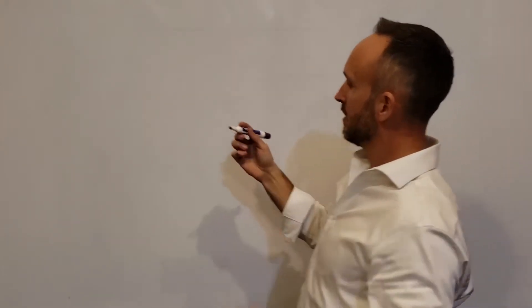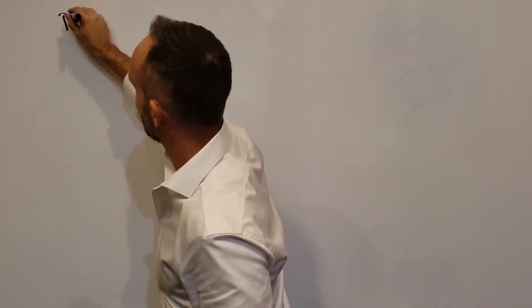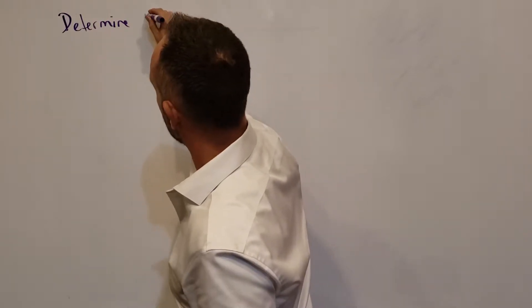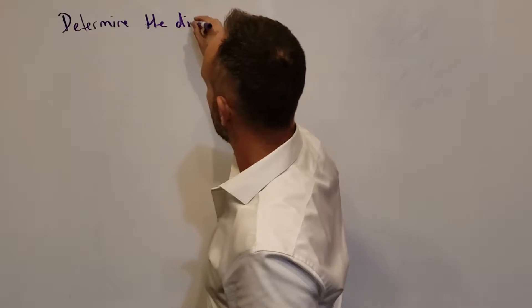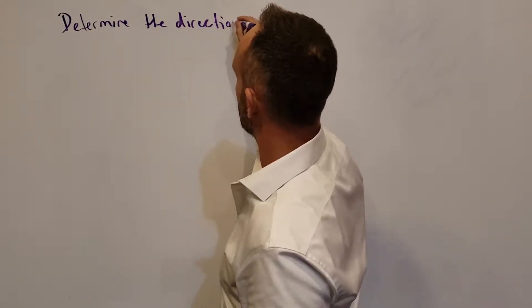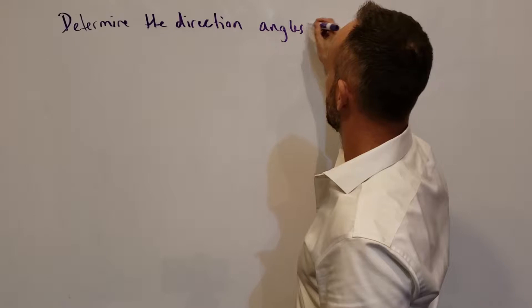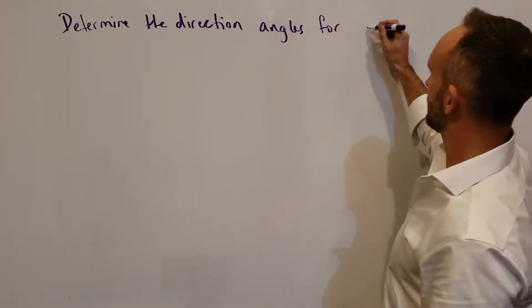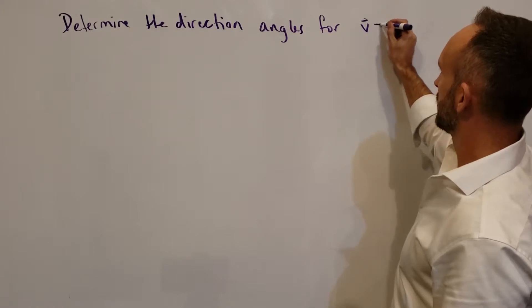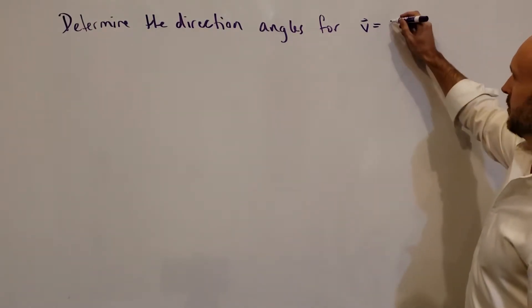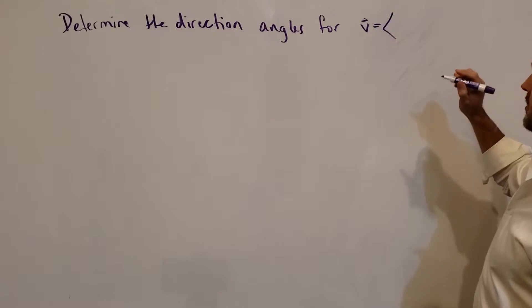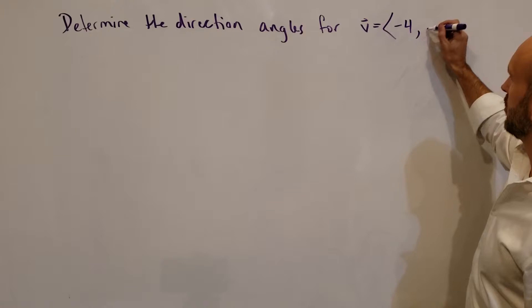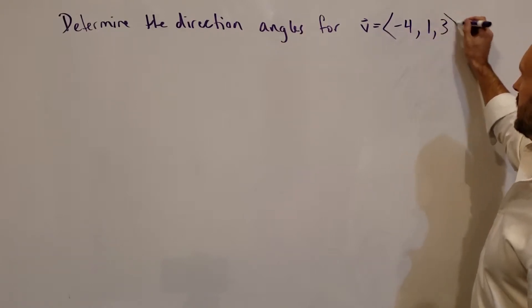Let's jump into an example. Let's determine the direction angles for the vector — let's call it vector v — which is (-4, 1, 3).